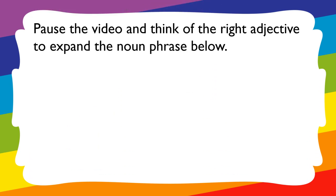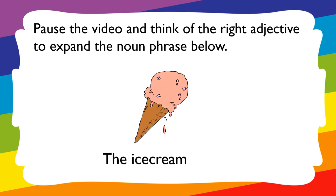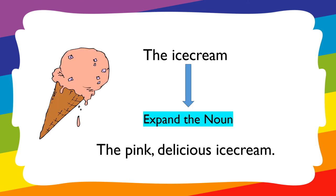I'd like you to pause the video and think of the right adjectives to expand the noun phrase 'the ice cream.' Can you come up with the right adjectives? Here we have an expanded noun phrase for the ice cream: 'the pink, delicious ice cream.' Here we have two adjectives, and we have a comma used to separate them — 'pink' and 'delicious.'